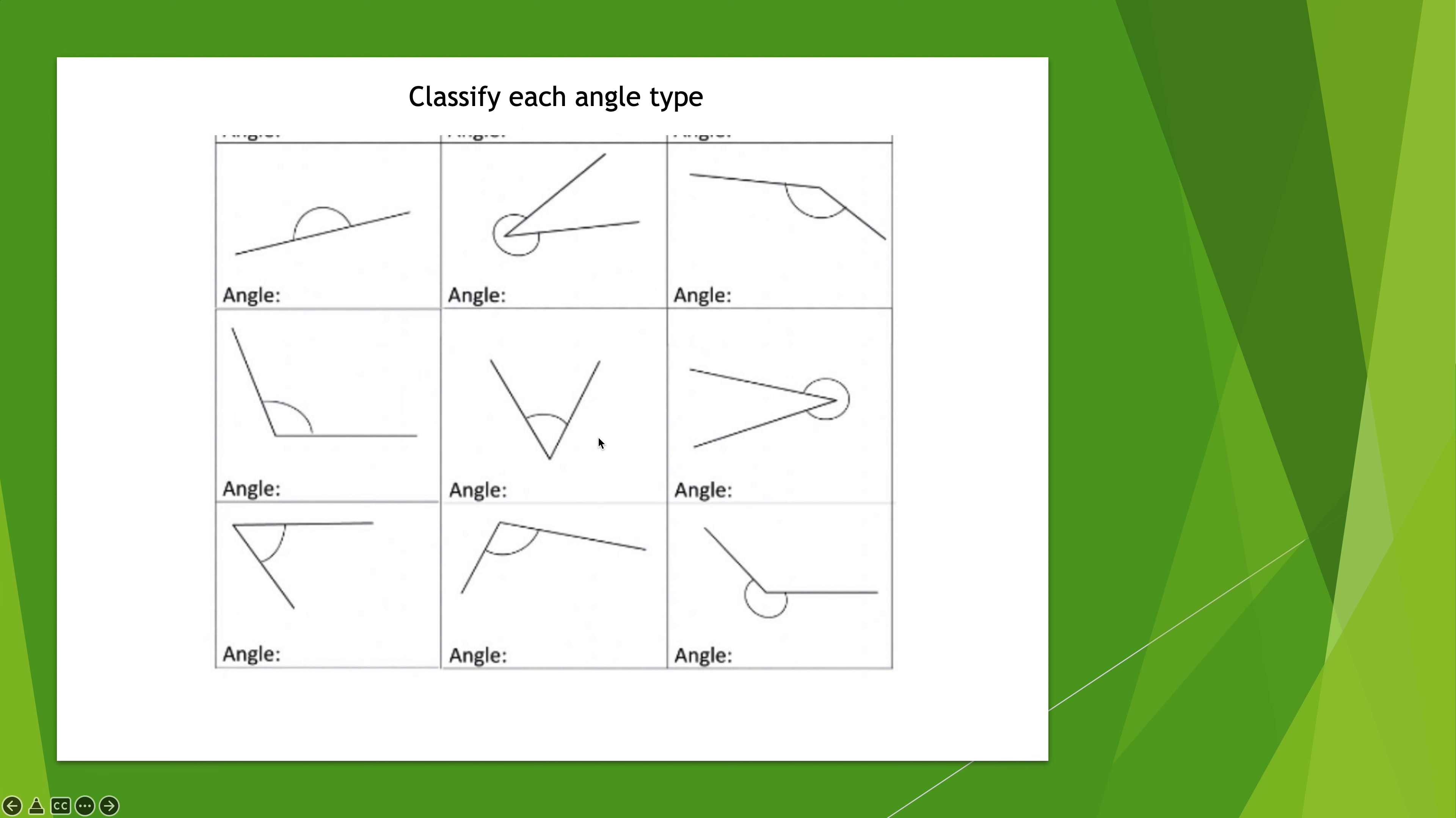Middle left, that would be another obtuse angle because it's past 90. Middle would be an acute angle. And then on the right middle would be a reflex angle, goes all the way past 180.